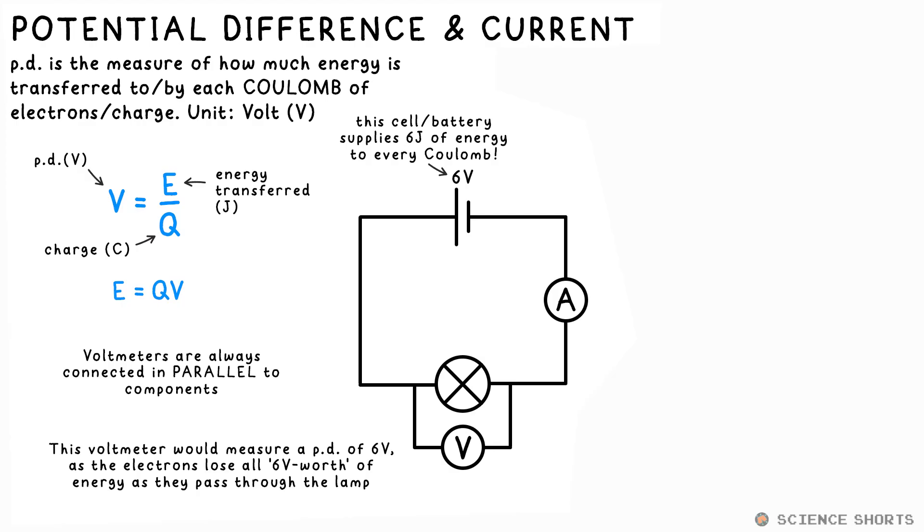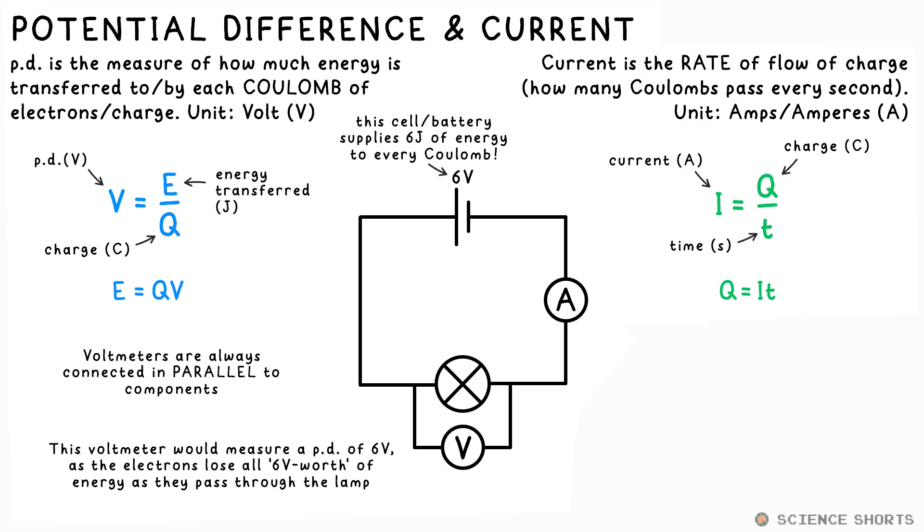Current, on the other hand, tells us what the rate of flow of charge is. Like any equation for a rate, it's something divided by time. So here it's current in amps equals charge in coulombs divided by time in seconds, or I equals Q over T.